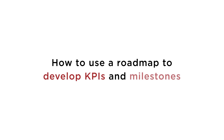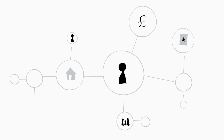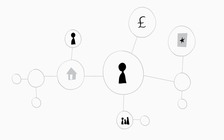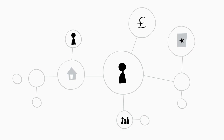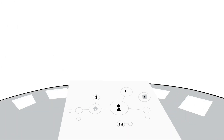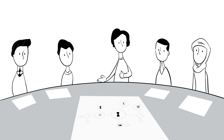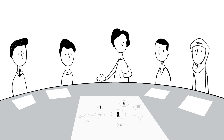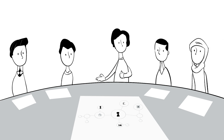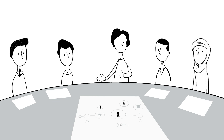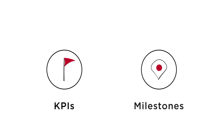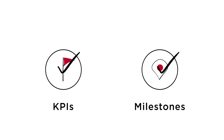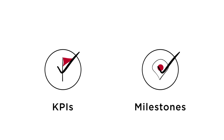How to use a roadmap to develop KPIs and milestones. The roadmap is the foundation for your project's future milestones and key performance indicators, known as KPIs. Donors and investors will require regular reports on your KPIs, and you'll need to achieve your milestones to be eligible for grant payouts. That means your KPIs and milestones will need to be finalised before any funding is awarded.